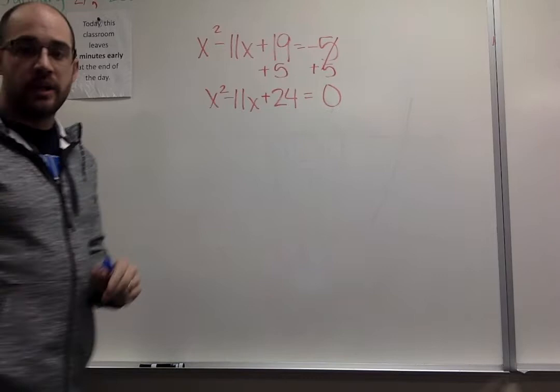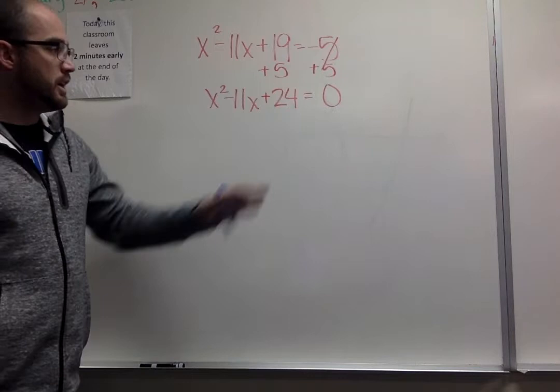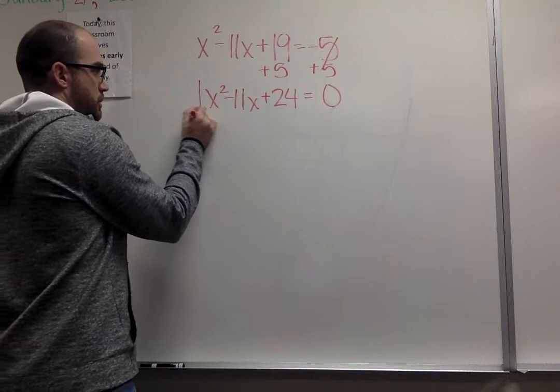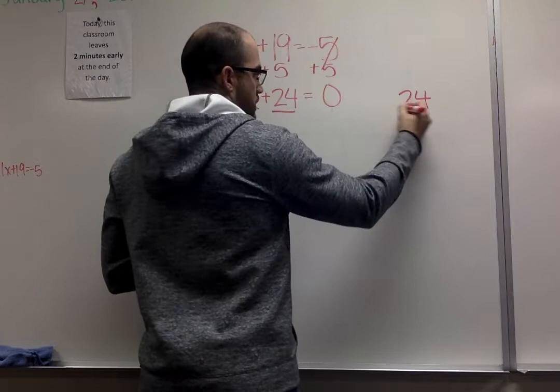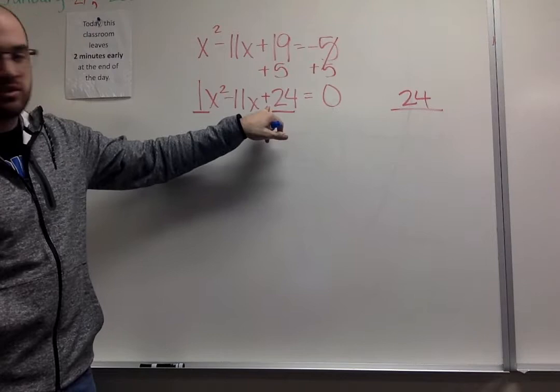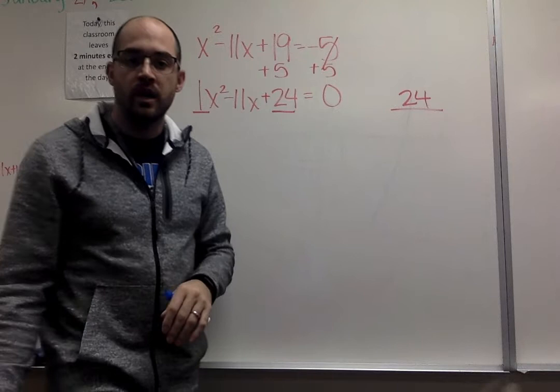At this point, we go right into our factoring. I multiply my a value times my c value to figure out what I'm going to be factoring. There's a 1 out in front. I'm going to multiply 1 times 24. It gets me 24. Be cautious of your signs. Right now, these are both positive, so I'll get a positive number here. If I were to have a negative sign here, that would make this a negative 24. That makes a difference when we get to our middle piece.